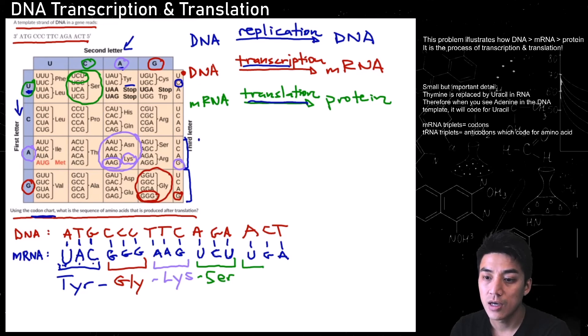And the last codon is UGA. I'm going to use a different color so you can see how these 15 bases will code for five different amino acids. So UGA, let's look for it. First letter is U. Circle that in yellow. Second letter, G. So I know it's in this box somewhere. And the last one is A. So UGA means stop. So that means the amino acid chain has come to a complete stop. And we have these four amino acids. So tyrosine, glycine, lysine, and serine. And finally, stop.